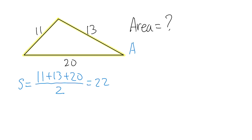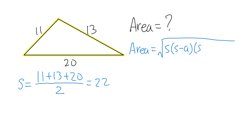Now, we can write down that the area is equal to: we take the square root, and then we do S times, in parentheses, S minus A, then times S minus B, then times S minus C. The A, B, C are just the sides of the triangle — it doesn't matter how you label them. I'll call 11 as A, 13 as B, and 20 as C.